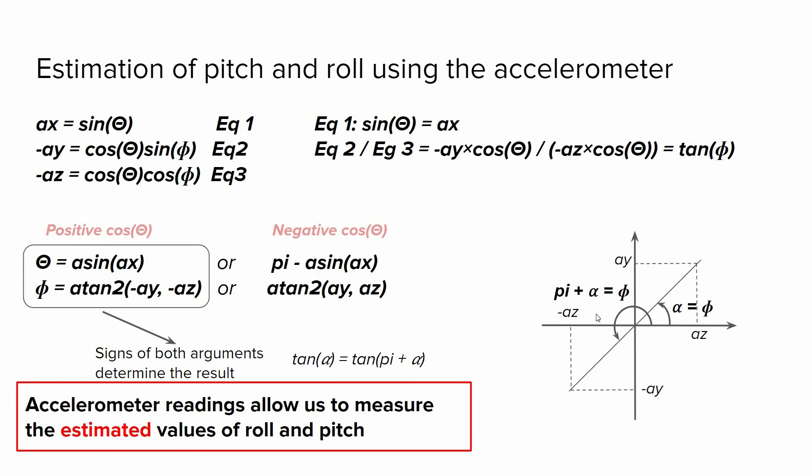This diagram clearly shows that. For example, if ay and az are positive, we have this angle, let's say alpha, but if both of them are negative, we have pi plus alpha. But in both cases, we have the exact same result as tangent.